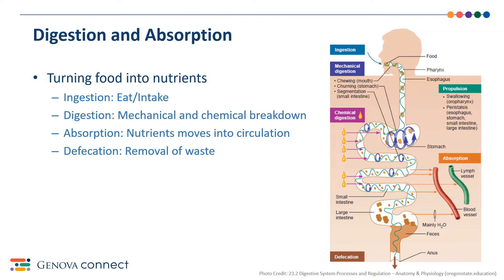Digestion and absorption — in essence, we are turning food into nutrients to fuel the body. This can be broken down into four separate steps: ingestion, digestion, absorption, and defecation. Ingestion is the action of eating. Digestion is a combination of mechanical breakdown of food or chewing and chemical breakdown. On average, you should chew your food about 32 times before swallowing, because in our saliva there are actually chemicals that assist in the breakdown of foods.